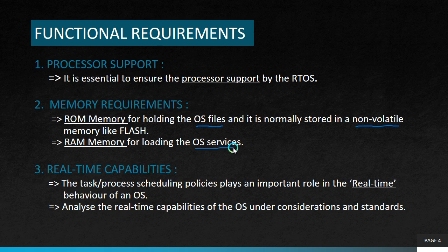Next we move on to real-time capabilities. It is not mandatory that the operating system for all embedded systems needs to be real-time, and not all embedded operating systems are real-time in behavior. The task and process scheduling policies play an important role in the real-time behavior of an OS. We should analyze the real-time capabilities of the OS under consideration and the standards met by the operating system for real-time behavior.